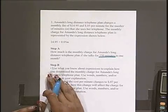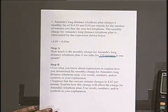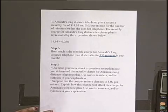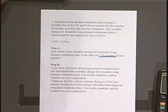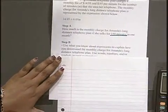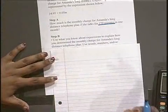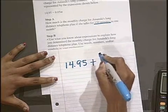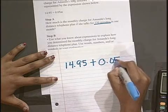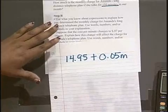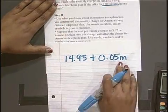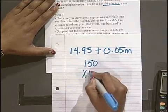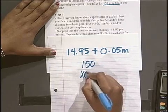So it says step B, use what you know about expressions to explain how you determine the monthly charge for Amanda's long-distance cell phone plan. Use words, numbers, and or symbols in your explanation. So I'm going to look at the first bullet. It's asking me to explain how we determine the monthly charge. So I'm going to first write down $14.95 plus the 5 cents that they're charging you plus the minutes. I'm going to substitute in 150 minutes for M.